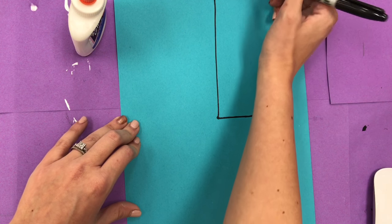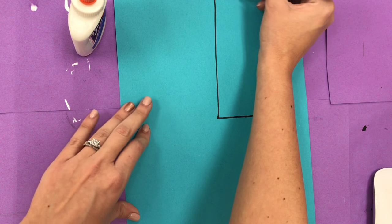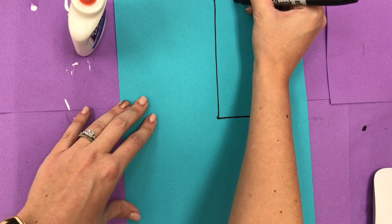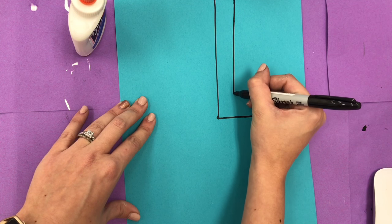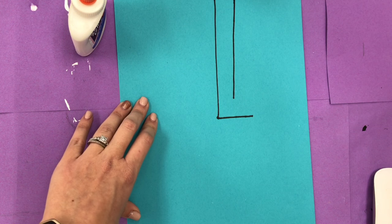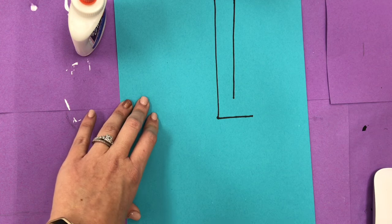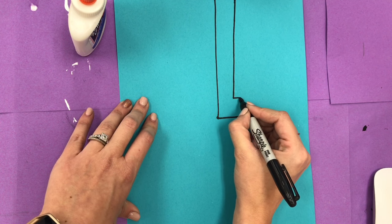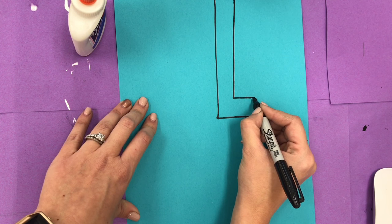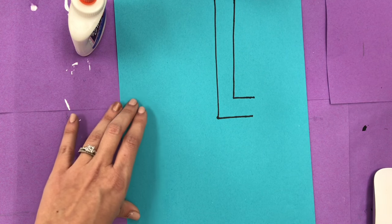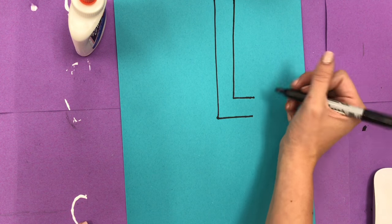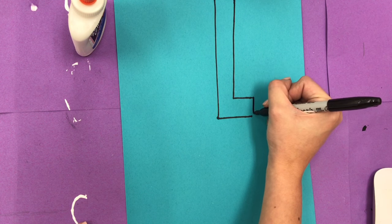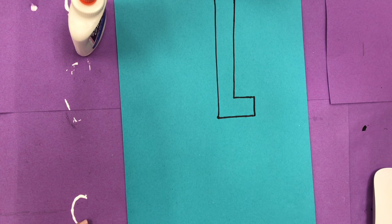So now, I'm going to go parallel to my horizontal line. And I'm going to stop before I get to my horizontal line. And then I'm going to go parallel to my horizontal line. And I'm going to close that off. And there I have my nose.